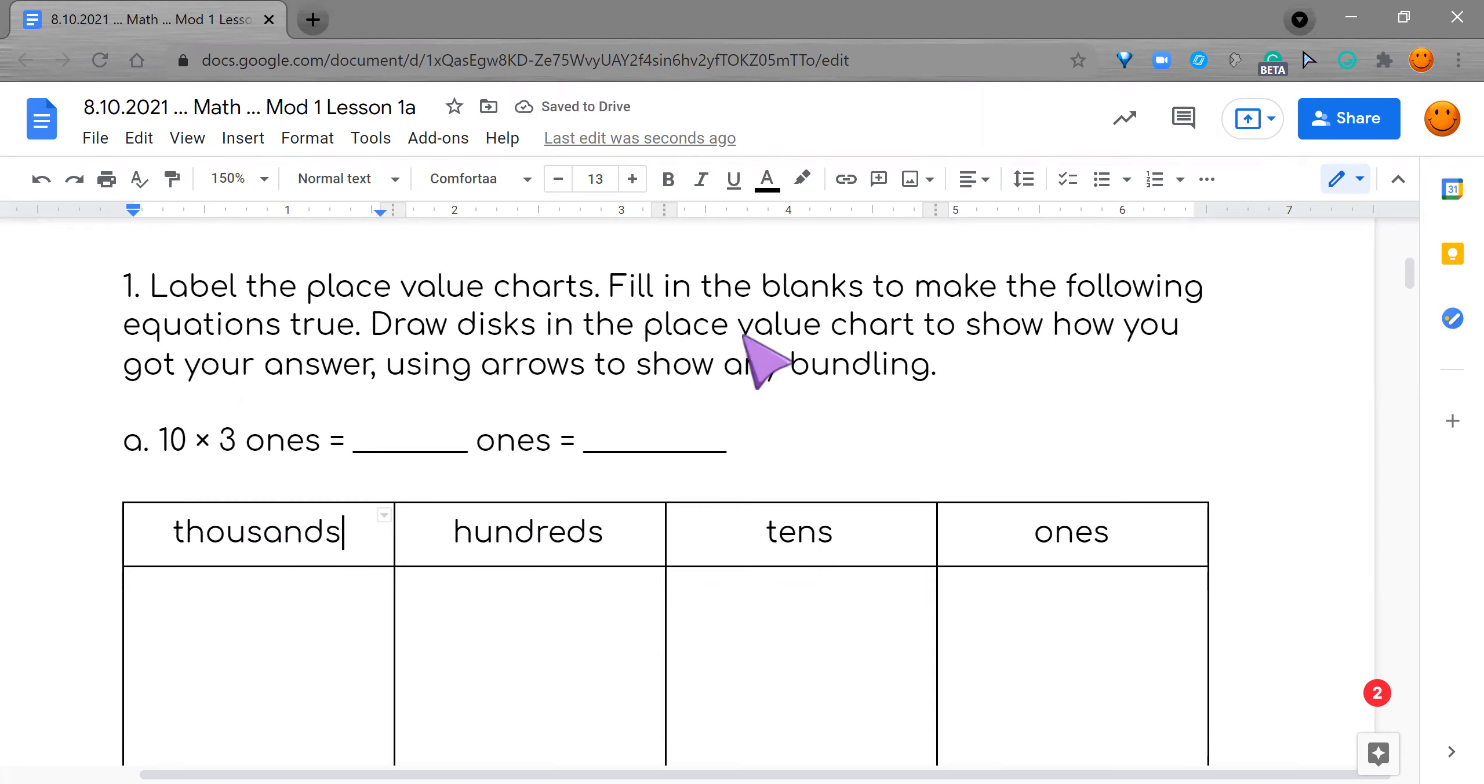Great job. Then it says to fill in the blanks to make the following equations true. So we have 10 times three ones. So 10 times three is? Very good. It is 30. So I'm going to make 30 ones. So what is 30 ones? Correct, you guys. It is the same as three tens.